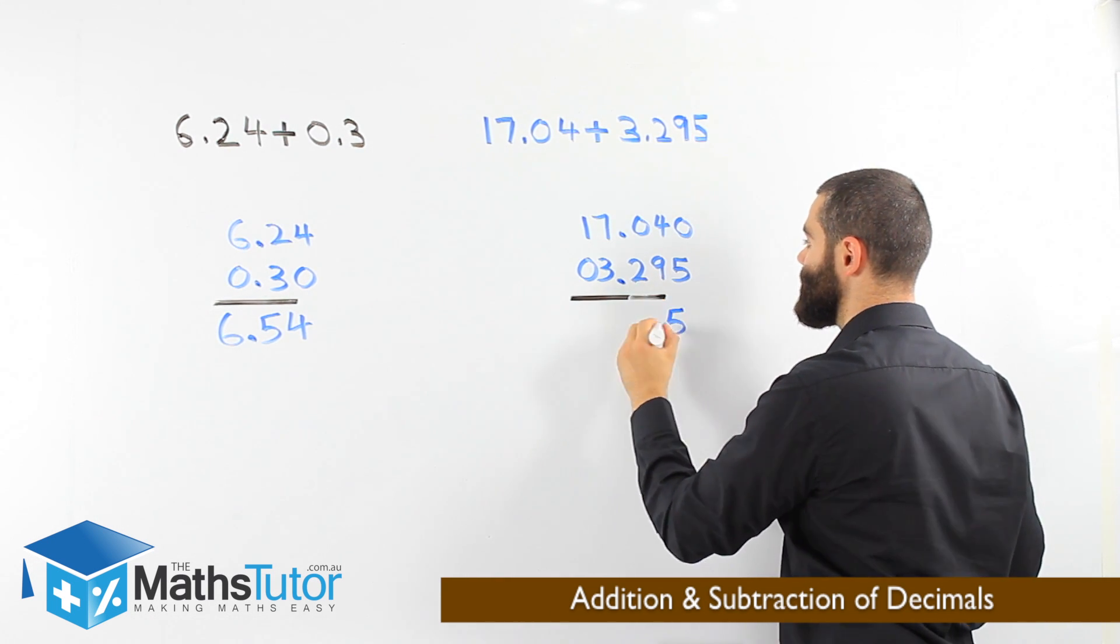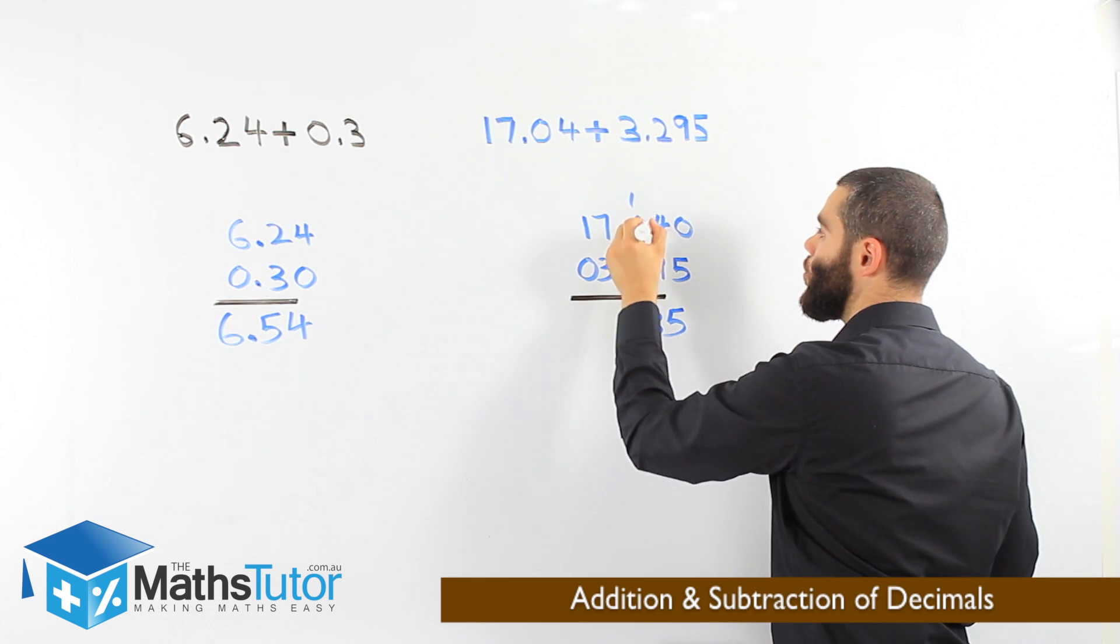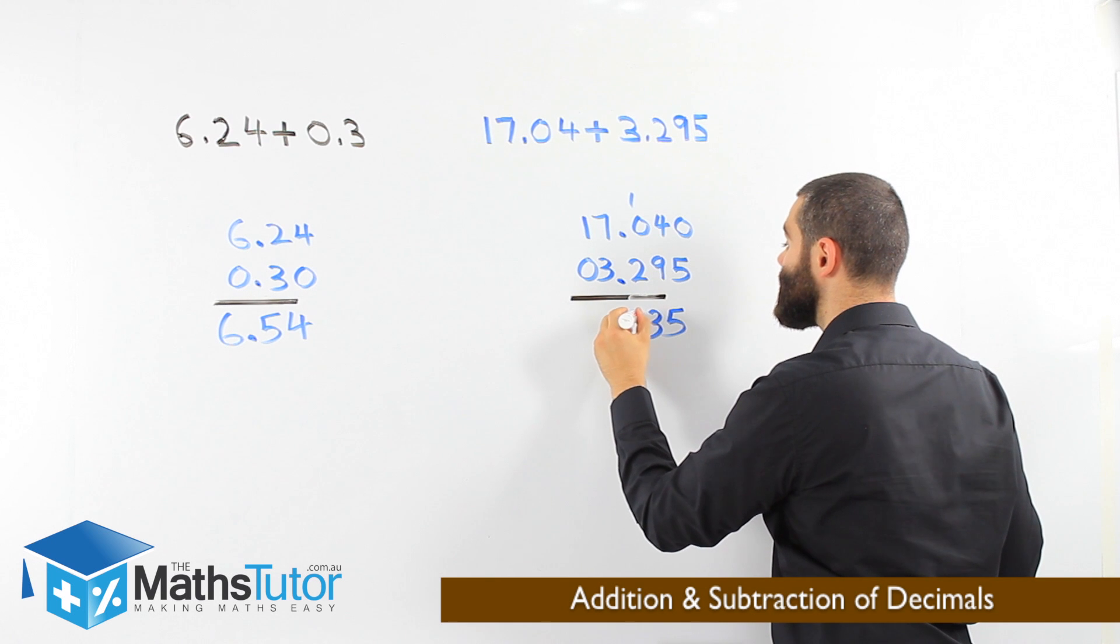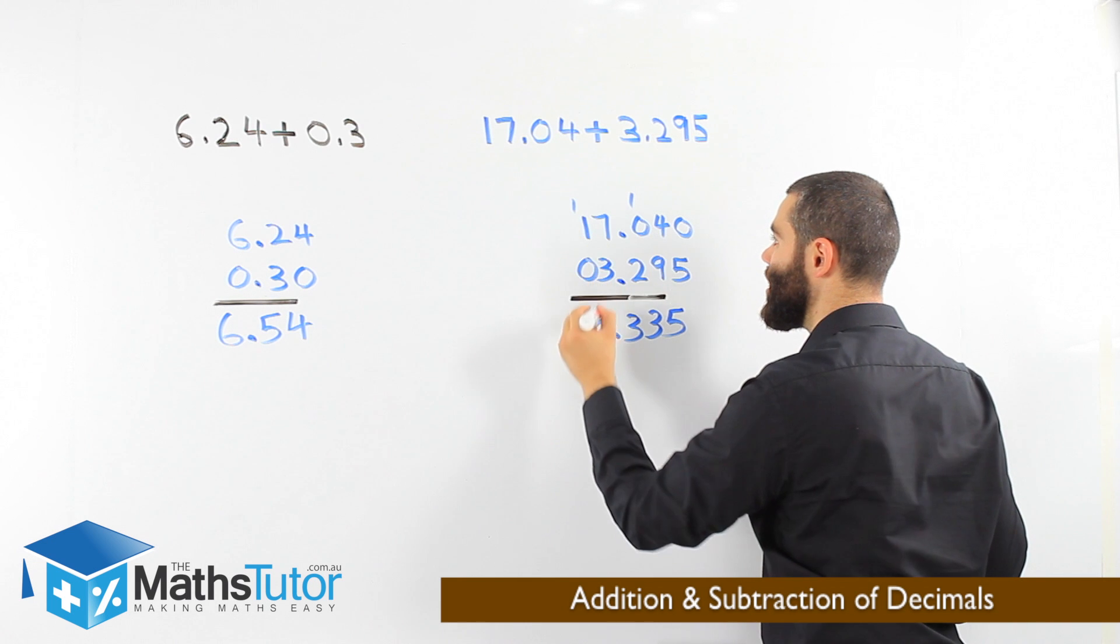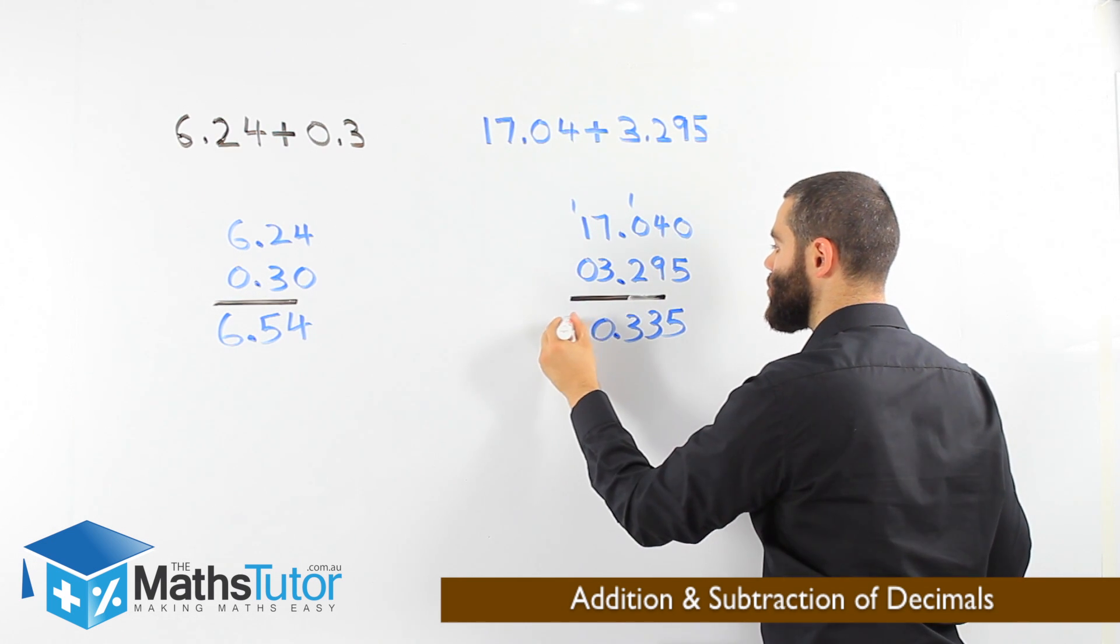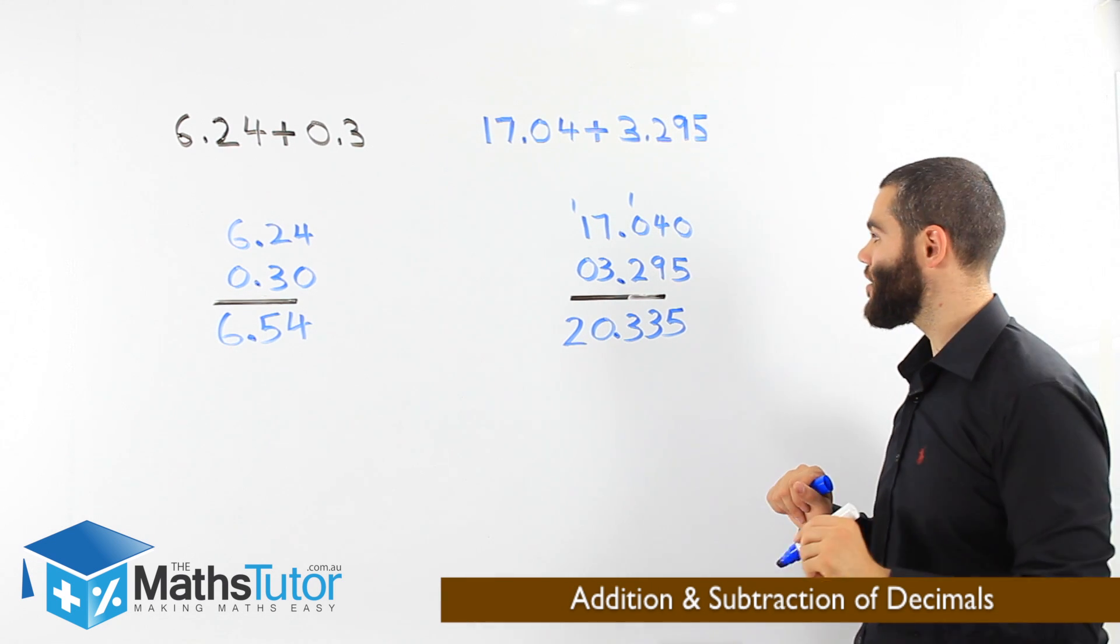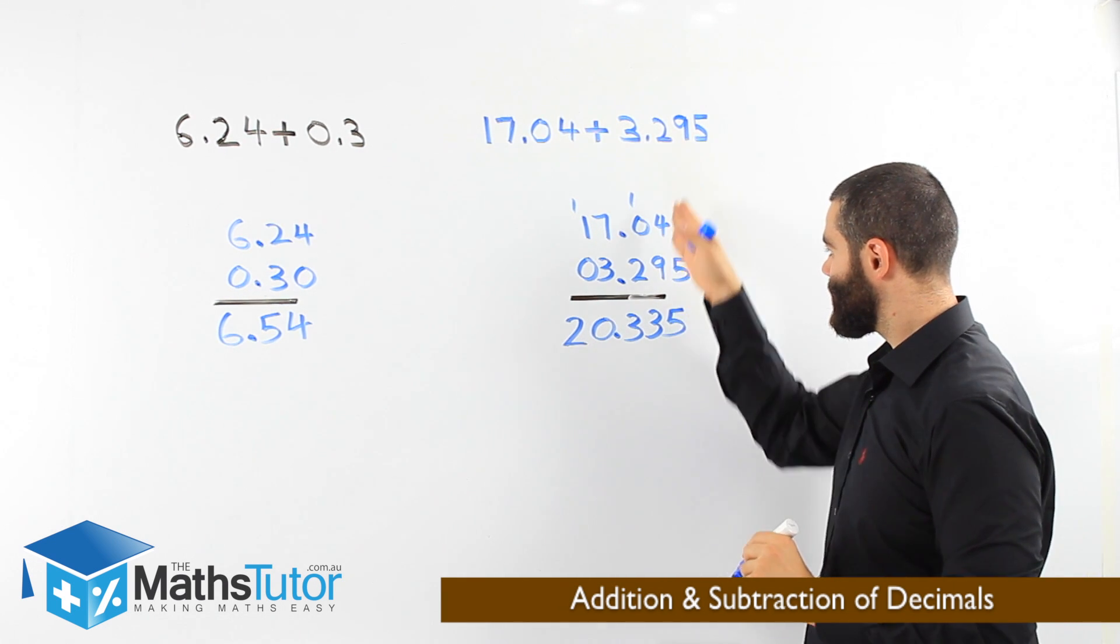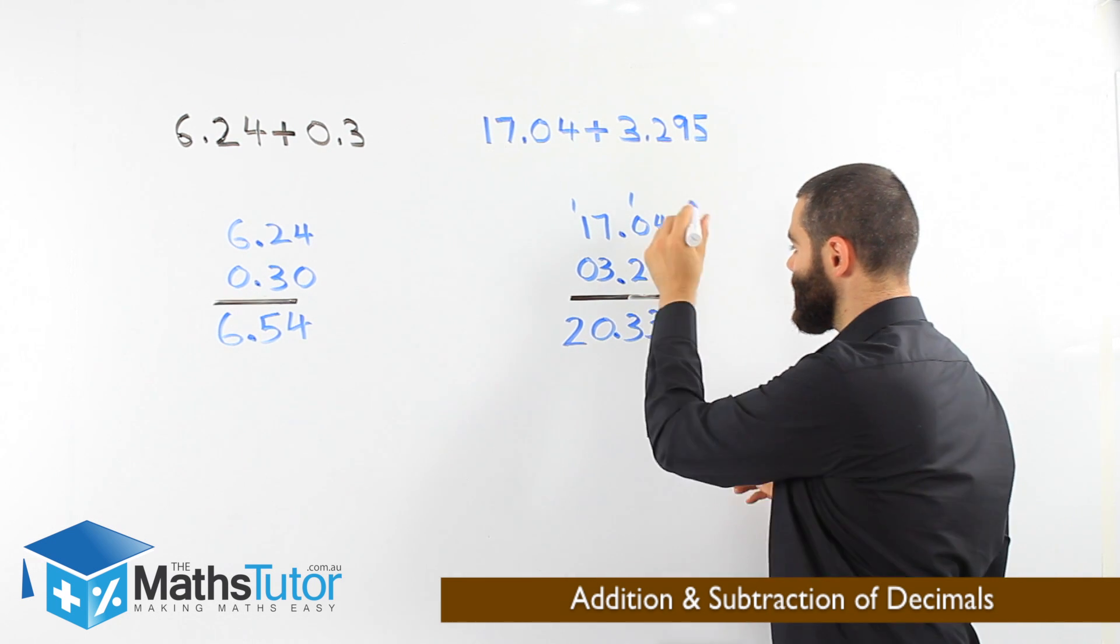0 plus 5 is 5. 4 plus 9 is 13. 1 plus 2 is 3. We put our point. Very important. 7 plus 3 is 10. We carry the 1. 1 plus 1 is 2. 20.335. So, alignment. Very critical. All our numbers are aligned in the right way. And we add.